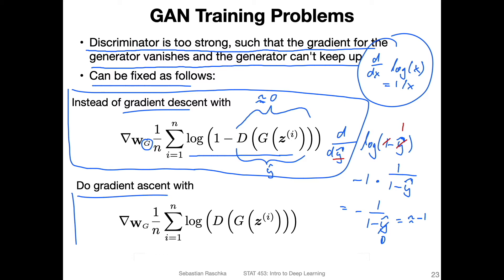A trick is to turn this gradient descent problem into a gradient ascent problem. We drop the 'one minus' here — so if the discriminator outputs zero, the loss would be infinity, and if it outputs one (what we want), the loss would be zero. The loss now ranges between zero and infinity, whereas before it was between minus infinity and zero. This gives us stronger gradients when the discriminator successfully detects the generated images.